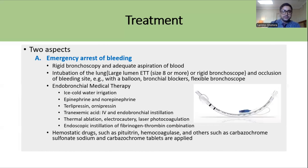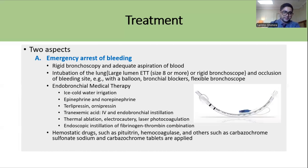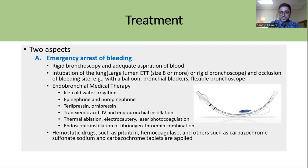After intubation, if the bleeding site is identified, it should be occluded using balloon bronchial blockers or a flexible bronchoscope. Endobronchial medical therapy can be used for emergency arrest, including ice-cold water irrigation, local injection of epinephrine or norepinephrine during bronchoscopy, local vasopressin, and endobronchial installation of tranexamic acid. There is also evidence for thermal ablation, electrocautery, or laser photocoagulation. Additionally, endoscopic installation of fibrin and thrombin combination and hemostatic agents like pituitrin or hemocogulase can be used.